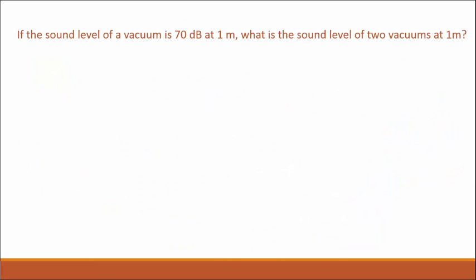Okay, next question we're going to look at. If the sound level of a vacuum is 70 decibels at 1 meter or from 1 meter away, what is the sound level of 2 vacuums from 1 meter away? And if you remember from the last one, I said whenever you double the sound output, you just increase by 3 decibels. So we already know the answer should be 73 decibels.